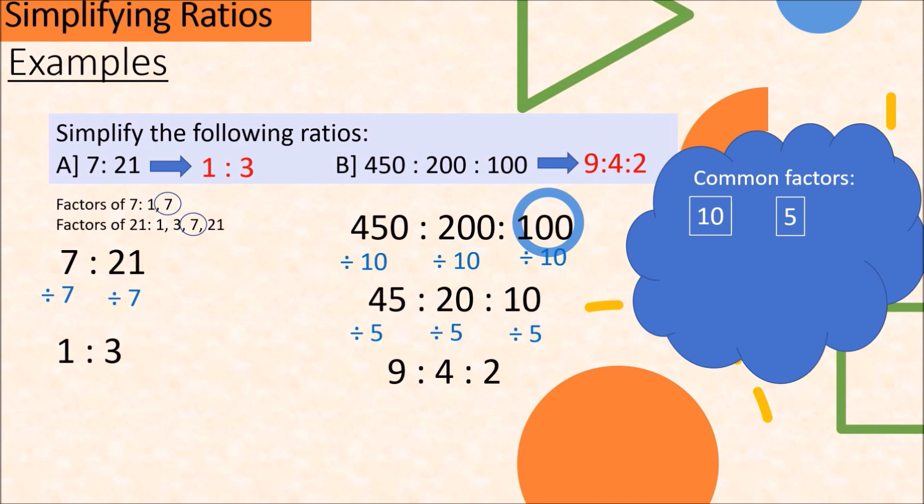Now look what could have happened if instead of dividing by 10 and then dividing by 5, we could have divided by 10 times 5, the two factors that we have used in those two steps. 10 times 5 is 50. And 450 divided by 50 is 9, 200 divided by 50 is 4, and 100 divided by 50 is 2. So we could have used 50 instead of 10 and 5 and get the same result. But again, I say for big numbers, you can do more than one step, two steps, or three steps, as long as you will keep on dividing the numbers, all the numbers, until you get the final or the simplest form.